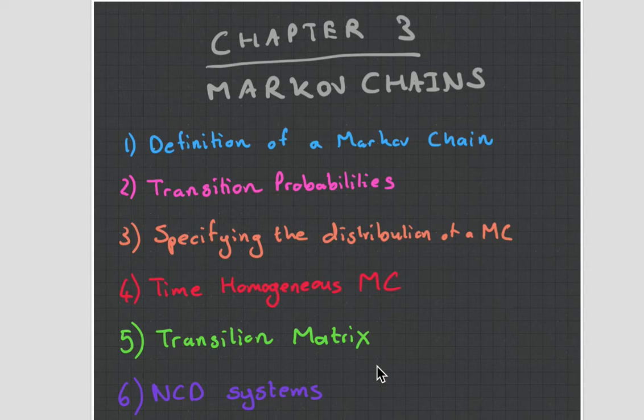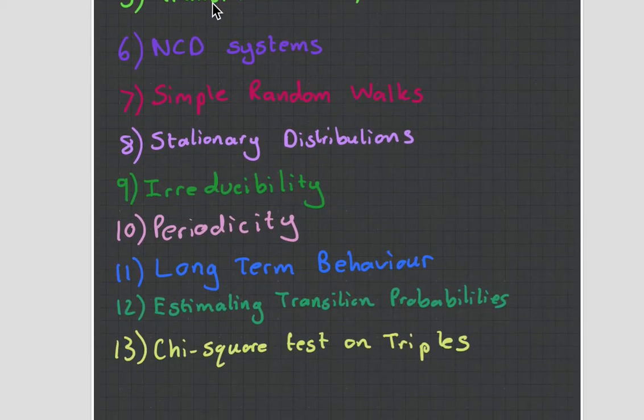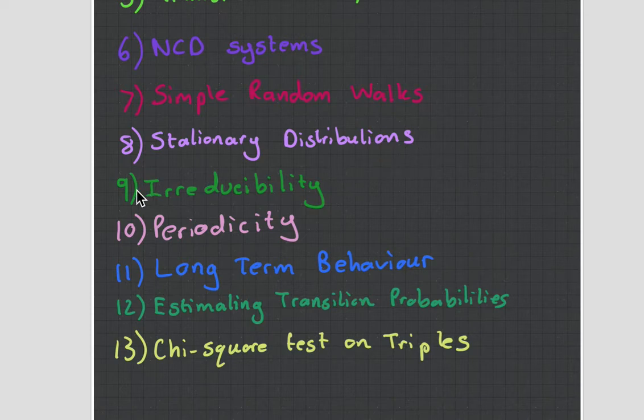Hey guys, it's MJ, the student actuary, and this is part two of chapter three in subject CT4, which is all about Markov chains. In this video, I'm going to be looking at simple random walks, stationary distributions, irreducibility, periodicity, long-term behavior, estimating transitional probabilities, and the chi-square test on triples. So it's a lot to get through.